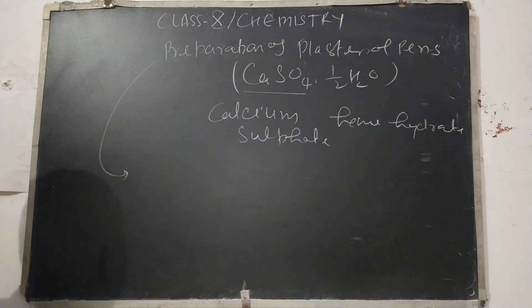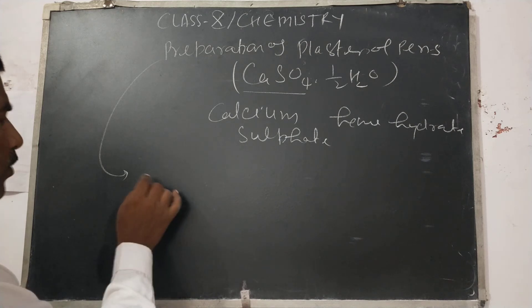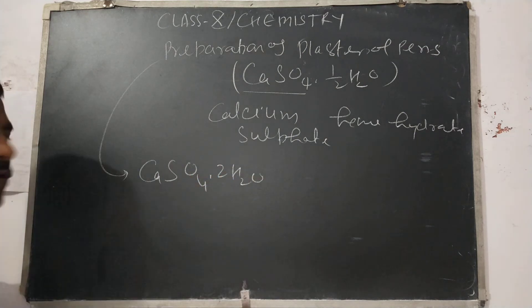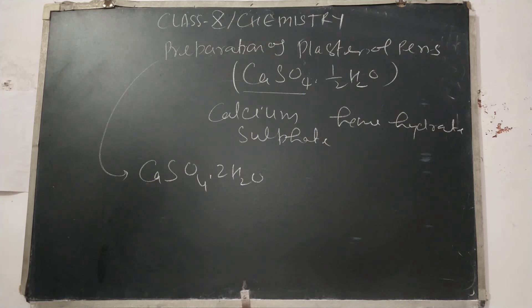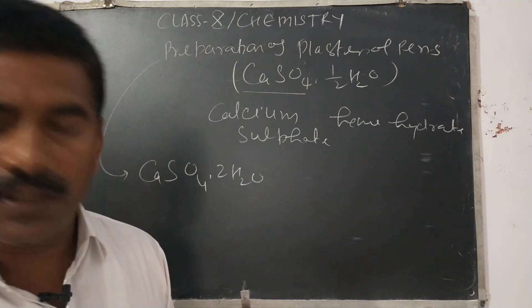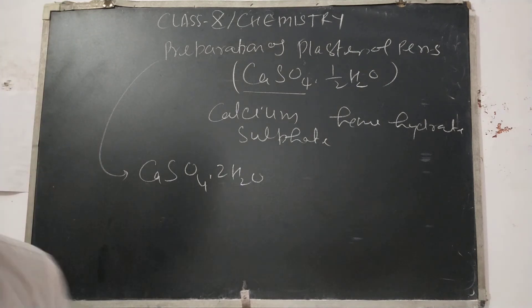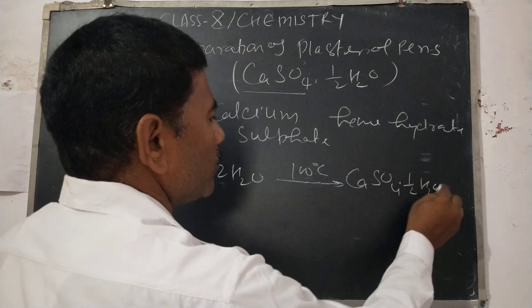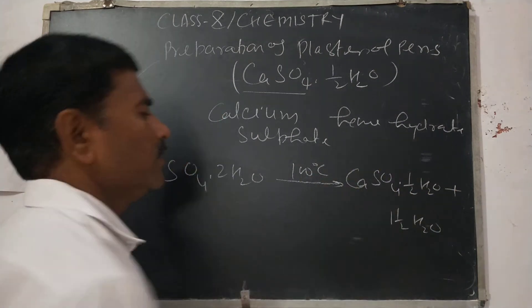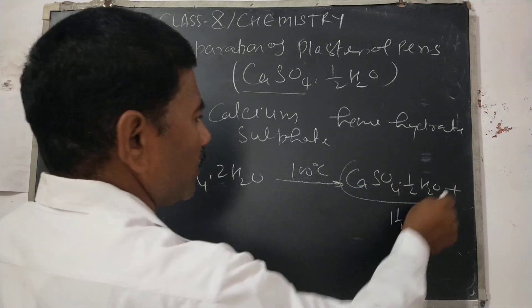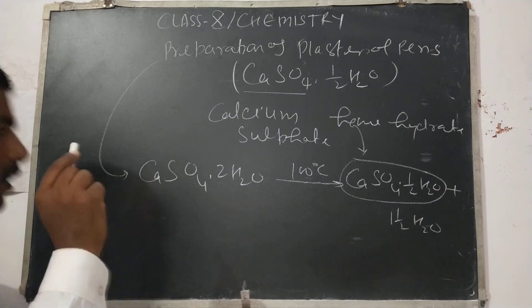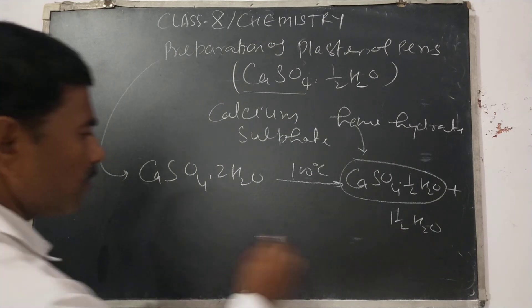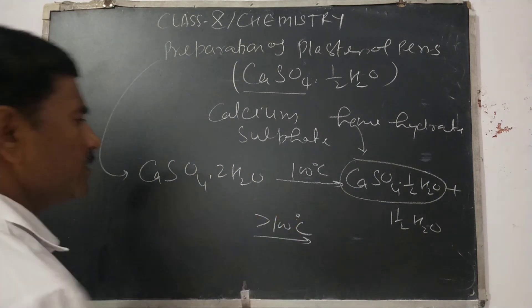Let us see its preparation. It is prepared from gypsum. When gypsum — CaSO₄·2H₂O, that is calcium sulphate dihydrate — is heated at 100 degrees centigrade or 373 Kelvin, Plaster of Paris is formed. Note that if heated above 100 degrees centigrade, Plaster of Paris will not be formed.